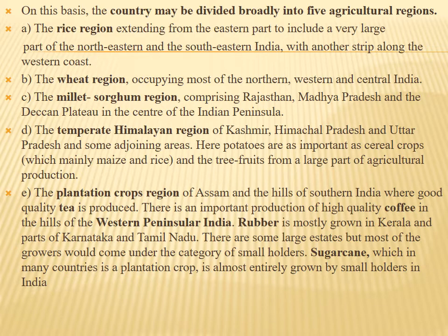The plantation crop region of Assam and the hills of southern India produces good quality tea. There is also important production of high-quality coffee. Rubber is mostly grown in Kerala and parts of Karnataka and Tamil Nadu. Sugarcane, though a plantation crop in many countries, is almost entirely grown by small holders in India.